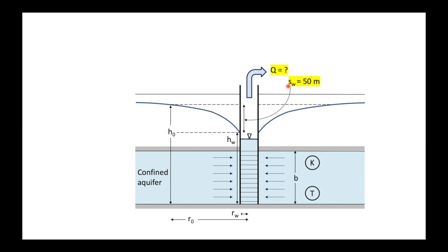Notice that we'll use sw for drawdown in the well instead of s1. In our Thiem equation, what we need to know is what's the difference between s1 and s2. s1 here becomes sw, and for s2 what we're going to use is the radius of influence of the well, at which point s2 will be zero. Our equation simplifies a bit. It's just 2πT sw divided by the natural logarithm of the radius of influence divided by the radius of the well.